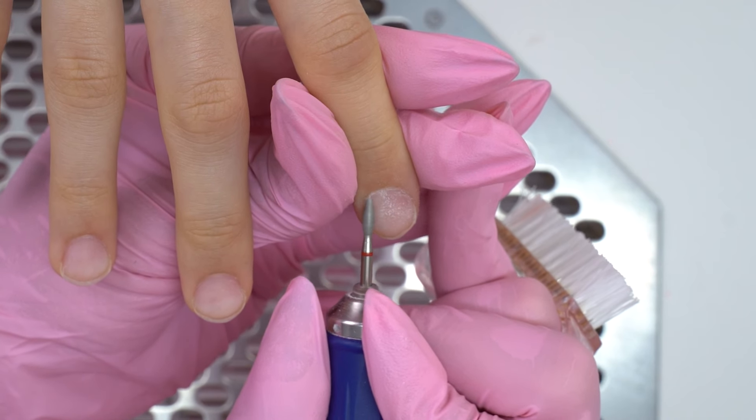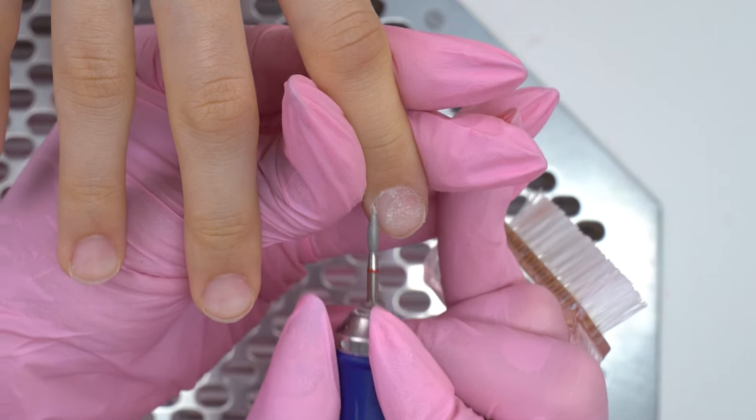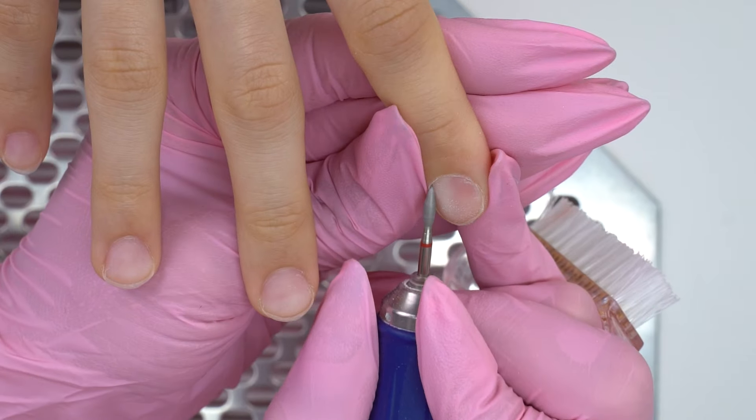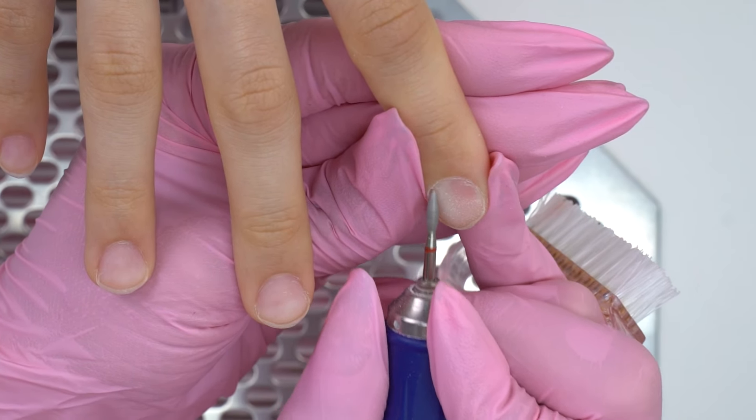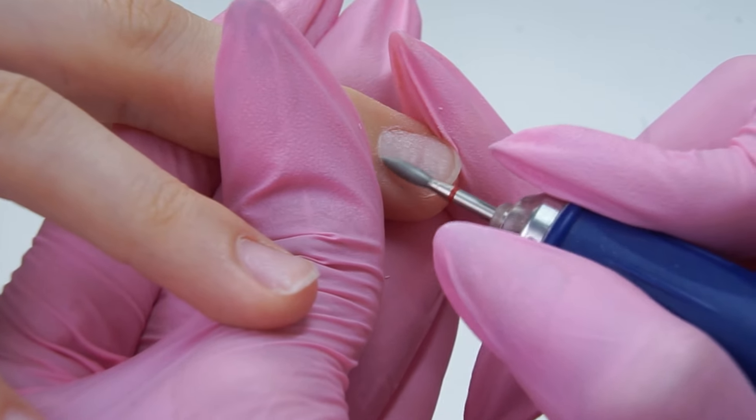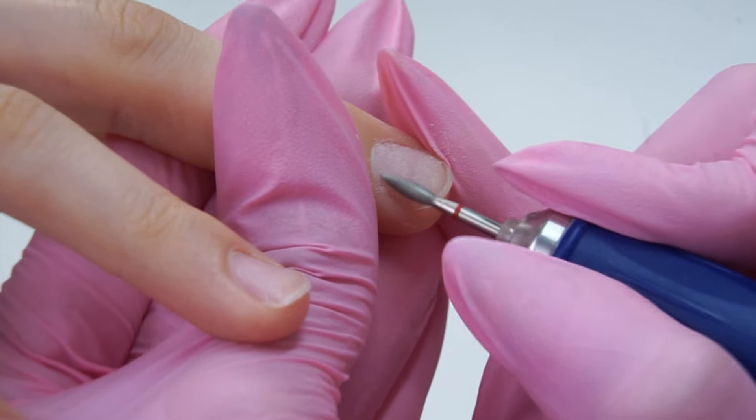First things first, let's prepare the nail plate for sculpting. I lift up the cuticle with a diamond flame drill bit. I won't cut it now. I will do it after sculpting since these cuticles are thin and I may easily injure them.